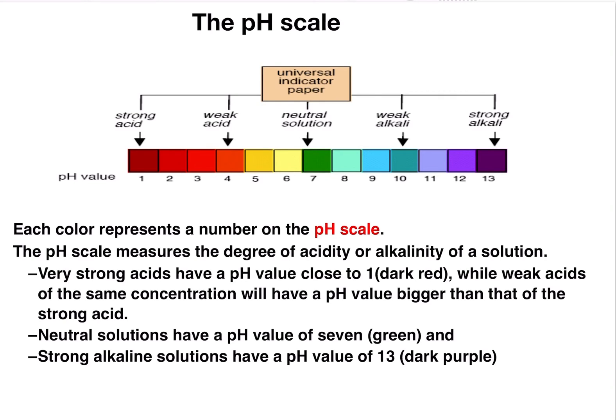Each color represents a number on the pH scale, which measures the degree of acidity or alkalinity of a solution. Very strong acids have a pH value close to one and appear dark red, while weak acids of the same concentration have a higher pH value. Neutral solutions, such as pure water or sodium chloride solution, have a pH of seven. Strong alkaline solutions have a pH of thirteen and appear dark purple.